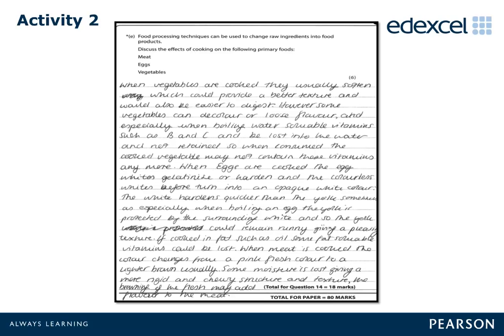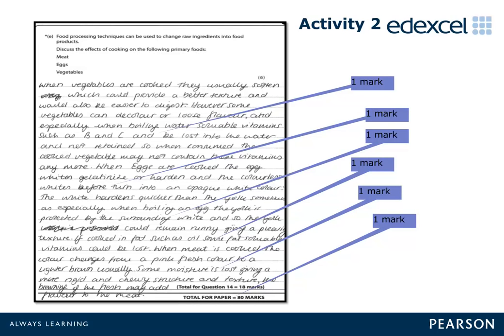Look at the example above. Using the mark scheme, decide what mark you think should be awarded and why. Meat: colouring from pink to brown 1, change of texture and to make it tender 1. Eggs: salmonella, food poisoning, change of structure from soft to hard 1, and coagulation 1 with temperatures included. Vegetables: makes vegetables soft 1, and they lose their nutritional make-up — vitamin B and C water-soluble vitamins 1.